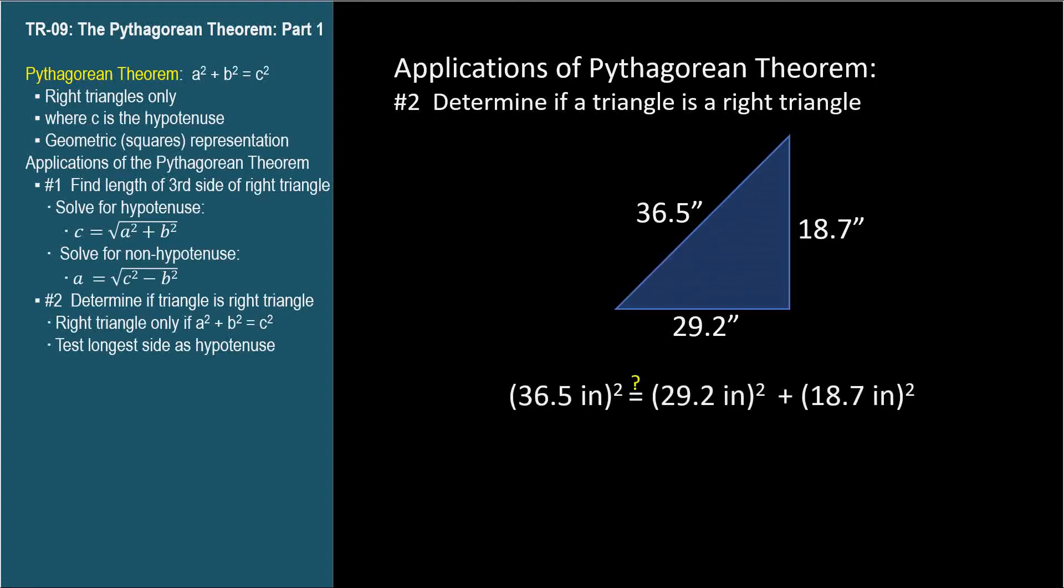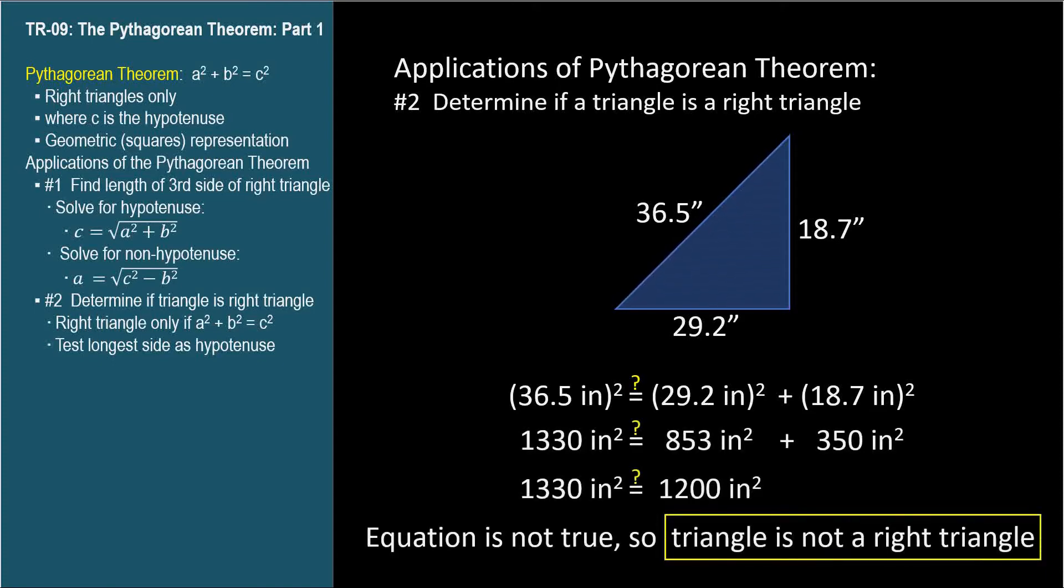If it were a right triangle, then 18.7 squared plus 29.2 squared would equal 36.5 squared. And no, they aren't equal, so the triangle is not a right triangle.